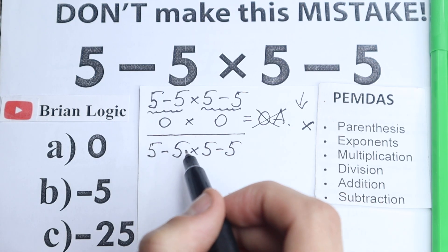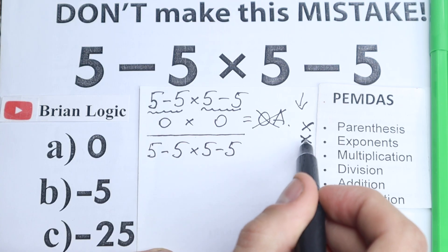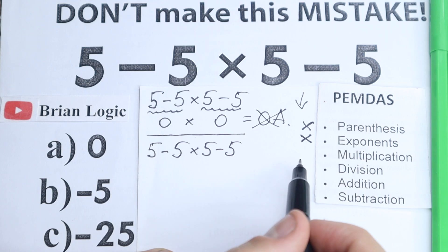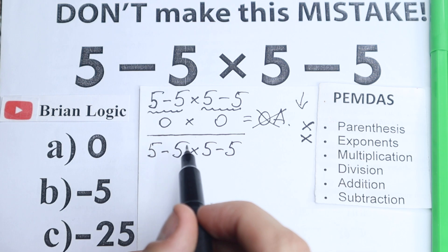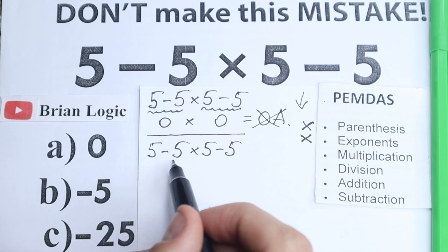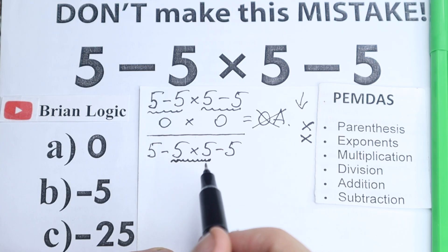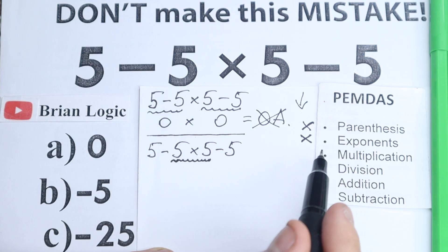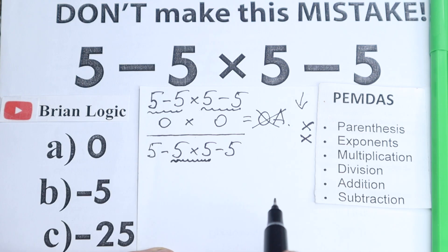Next: exponents — cubes, squares? I don't see any of those, so we reject this step as well. We have no parentheses and no exponents. Now: multiplication and division group. Where do we have a multiplication or division sign? We have a multiplication sign right here in the middle. Before, the wrong approach subtracted first, but the correct first step after parentheses and exponents is the multiplication and division group.